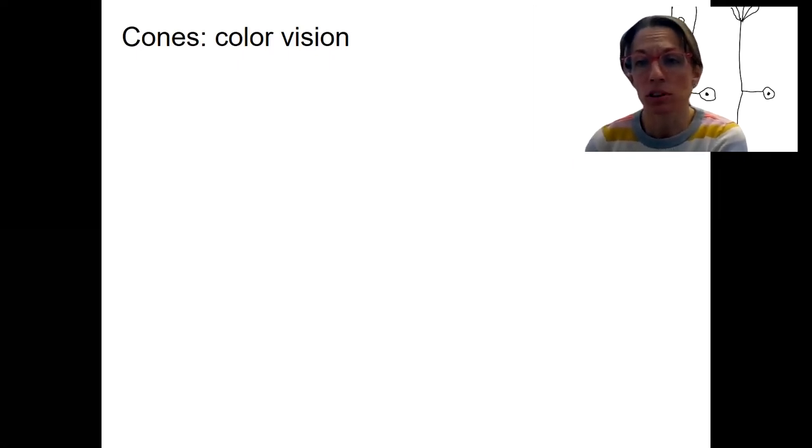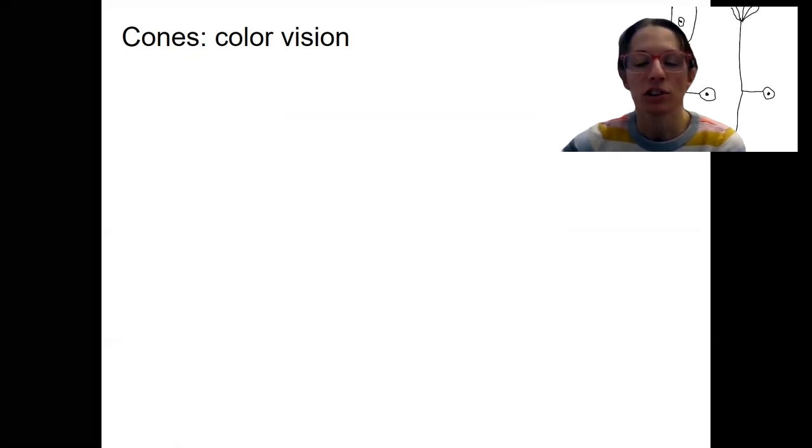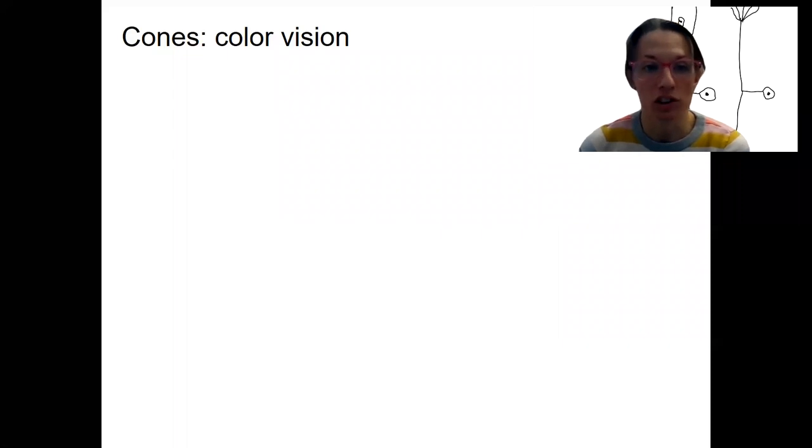So remember I said most humans have three functional types of cones, whereas only one type of rods. Rods are for dark, so when it's dark out, being able to see, versus cones are for color vision.